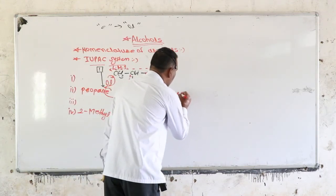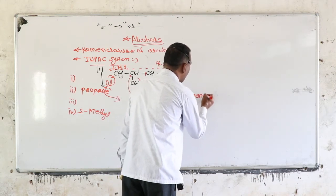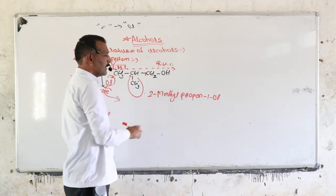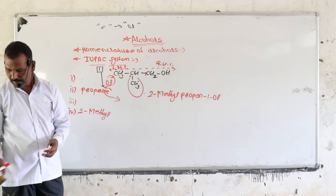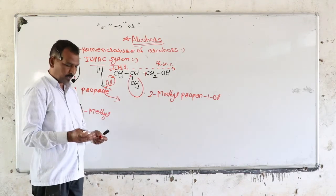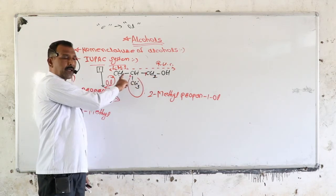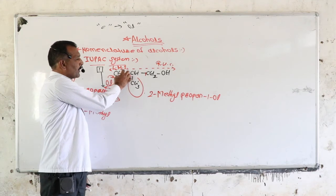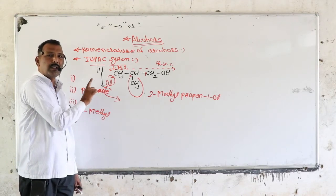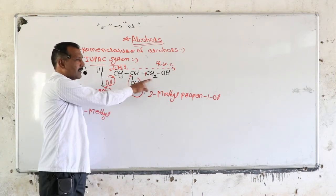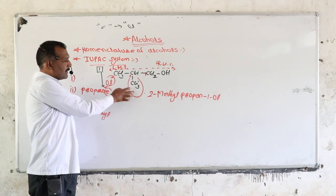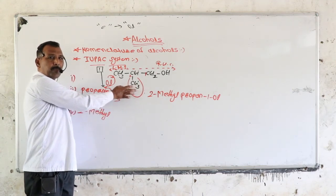So in this way we can write the IUPAC name of an alcohol. To summarize all the rules: first select the longest chain containing the hydroxyl group — that is the parent chain. Count the number of carbons and write the corresponding alkane name. Number the parent chain from the end to which the hydroxyl group is nearest. Identify the side chains and their positions. Replace the ending 'e' with 'ol' and indicate the position of the functional group before the suffix.